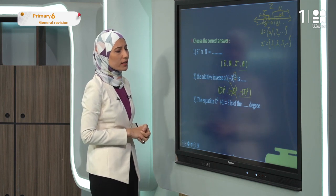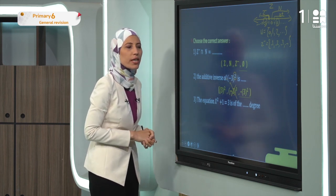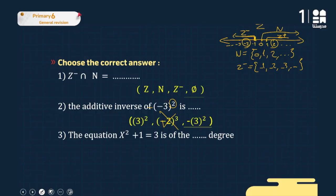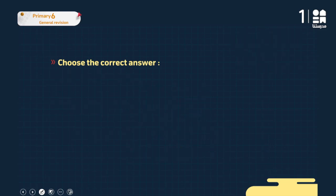Exercise three: the equation x² + 1 = 3. Remember, the degree is the highest power of the unknown. Here the highest power is 2, so this is a second-degree equation.